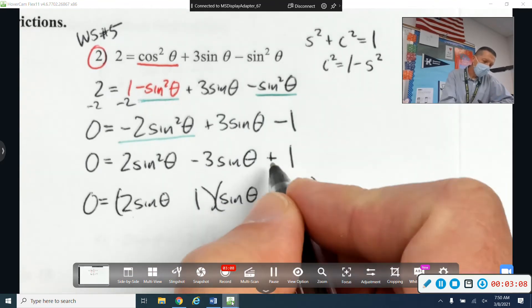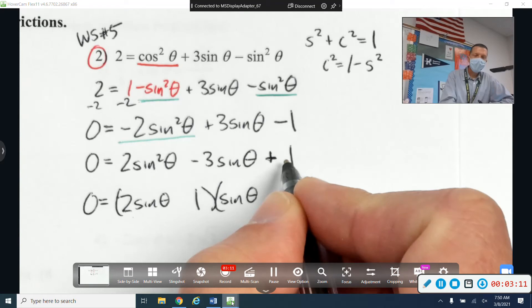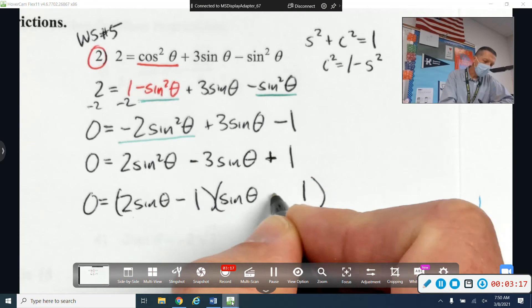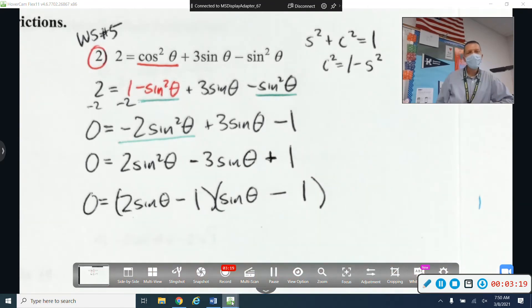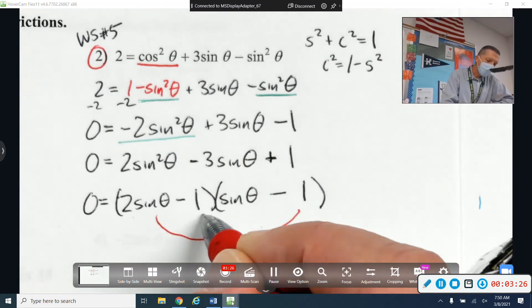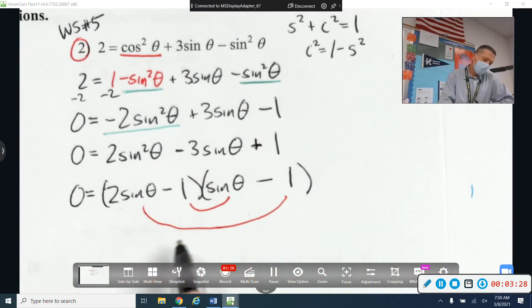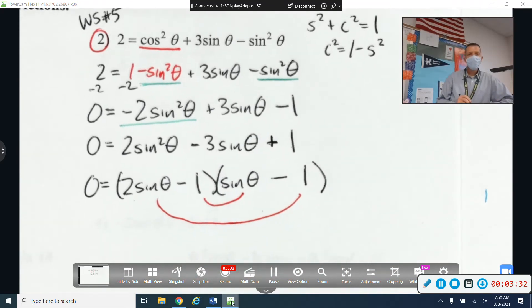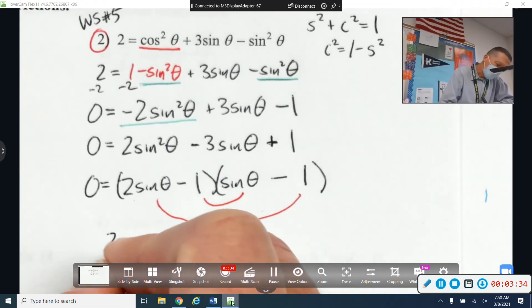And both signs need to be the same to make the last sign positive. And I want the middle sign to be negative. So if they're both negative, I think that will work. Again, your check is the O and the I, or the double smiley face, if you will. Negative 2 minus 1 is negative 3. So set them both equal to zero.